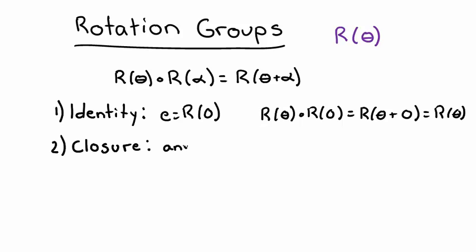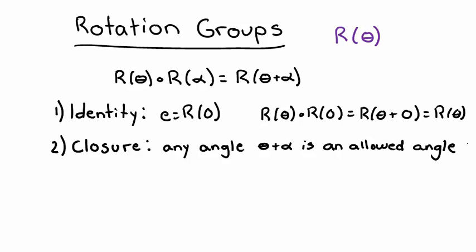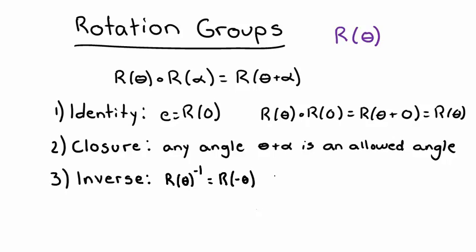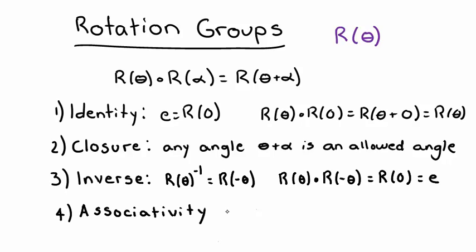Next we check closure. In this case, the things we're adding are all just angles, and we know that the addition of theta plus alpha gives us some other allowable angle that will still be in the group, so closure seems pretty good too. To check the inverse, remember that we want some element combined with its inverse to give us back the identity, which we said was a rotation by zero. I'll claim that the inverse of a rotation by theta is just a rotation by negative theta. This way, the composition yields a net rotation by theta minus theta, which is just a rotation by zero — the identity. Finally, associativity deals with the rule for combining angles, which is just addition, and we know that addition is associative, so that property holds as well.